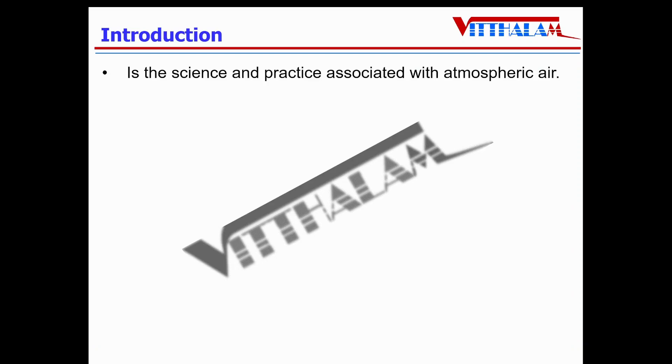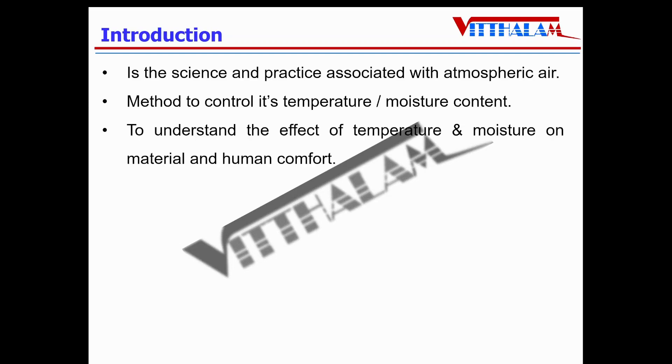Air psychrometry is the science and practice associated with atmospheric air. It is a method to control air temperature and moisture content, as well as to understand the effect of temperature and moisture on material and human.